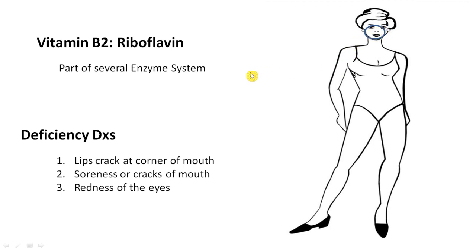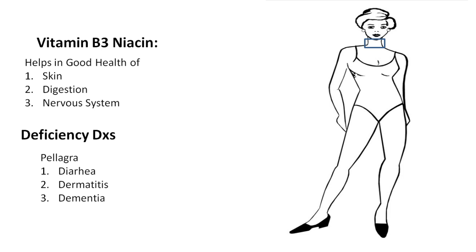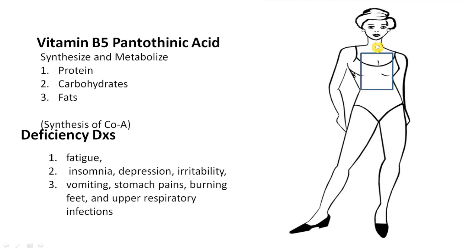Vitamin B3 is Niacin. Remember it by going from front to back: first you have skin, then the esophagus, then the nervous system. It helps in the good health of skin, digestion, and the nervous system. Its deficiency causes pellagra — characterized by dermatitis, diarrhea, and dementia — three systems affected.